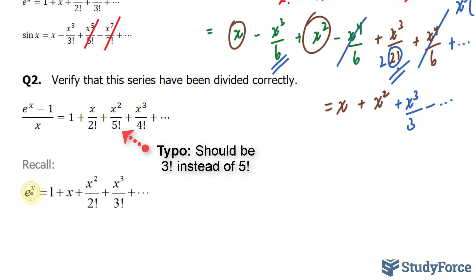The Maclaurin series for e to the power of x is shown right here. And what I'll do is first subtract this expression by minus 1. So if I have e to the power of x minus 1, I'll take this minus 1 over to the other side. Then this 1 and this minus 1 will cancel out, leaving us with x plus x to the power of 2 over 2 factorial, plus x to the power of 3 over 3 factorial. That takes care of the numerator.